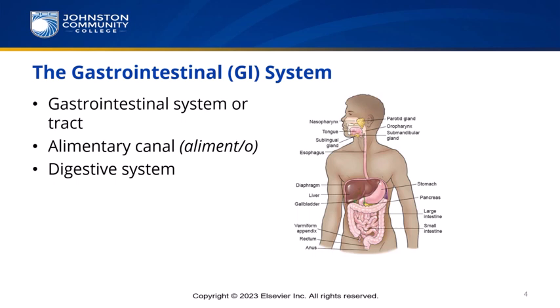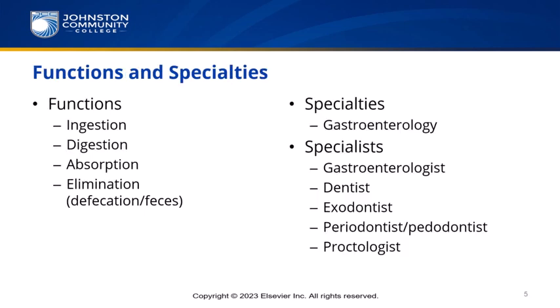The word canal refers to a long tube that food travels through on its route through the body. The digestive system is probably the term you're most familiar with, though digestion is specifically the process of breaking apart food. The functions of the GI system include ingestion — the intake of food — digestion — the physical and chemical breakdown of food — absorption — the extraction of nutrients — and finally elimination, which is the excretion of waste products.